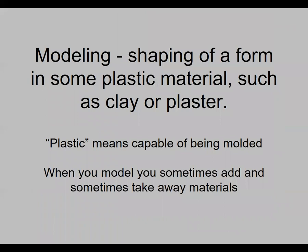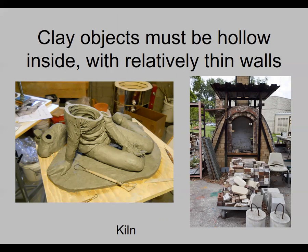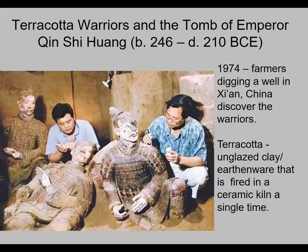Modeling is shaping a form in some plastic material, such as clay or plaster. 'Plastic' here doesn't mean toys — it means capable of being molded. When you model something, you add and sometimes take away materials. Clay objects have to be hollow inside, and you have to pound the clay to get all the air bubbles out before firing them in a kiln. The clay needs relatively thin walls so it dries all the way through before firing — if it's solid, it may not dry, and it will explode in the kiln.